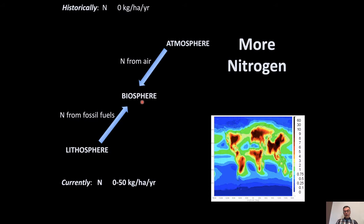We are taking nitrogen from the air that is not typically available to organisms, fixing it, and making it available in the biosphere — mainly through fertilizers, but there are other sources. In fertilizers alone, we add about 170 million tons per year to our crops. We also add nitrogen from the burning of fossil fuels. Historically, there was almost no nitrogen entering ecosystems around the world. Currently, some places still have nearly zero, but in some places we've brought it up to about 50 kilograms per hectare per year, which is quite a lot.